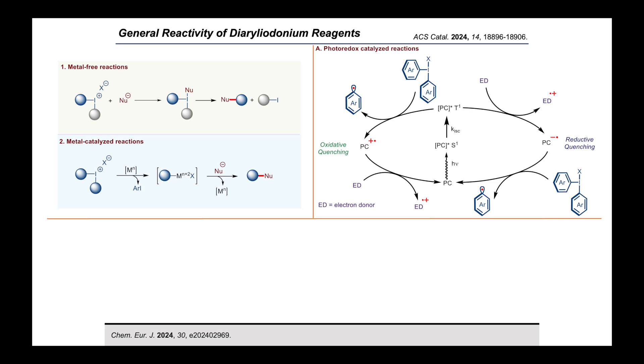In another way, a donor can give an electron to the excited-state photocatalyst forming a reduced state of the photocatalyst, which then gives an electron to diaryl iodonium reagent generating the aryl radicals by coming back to its original state. This process is called reductive quenching.